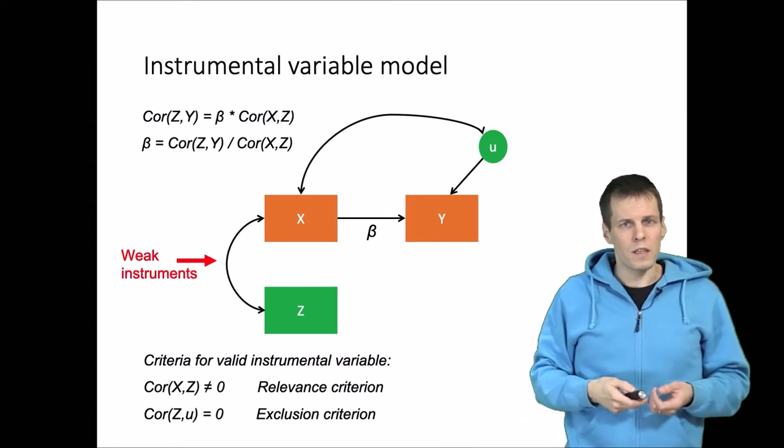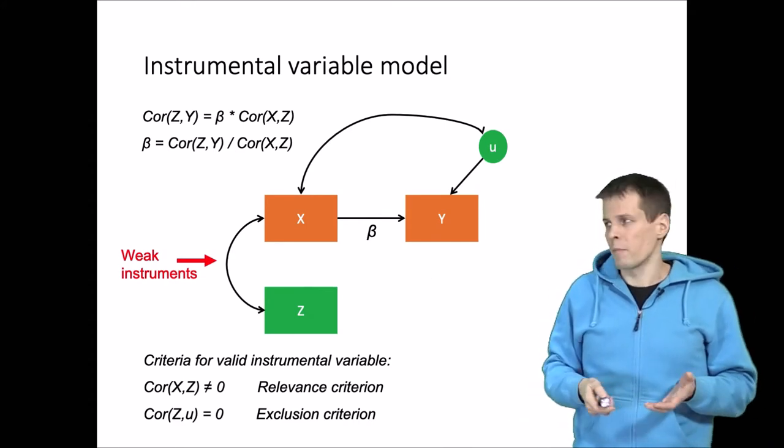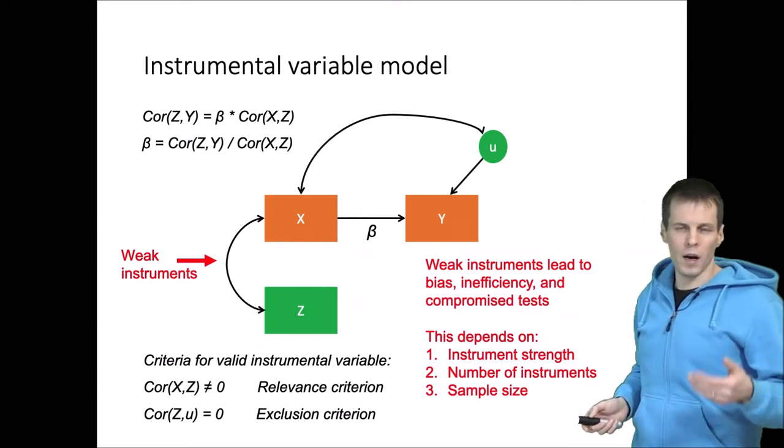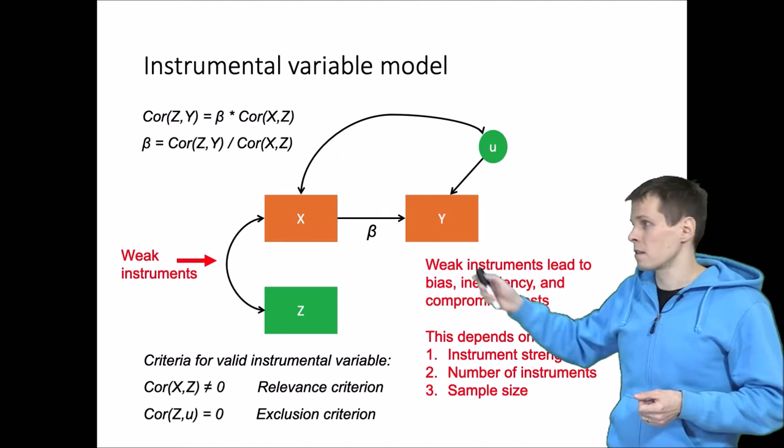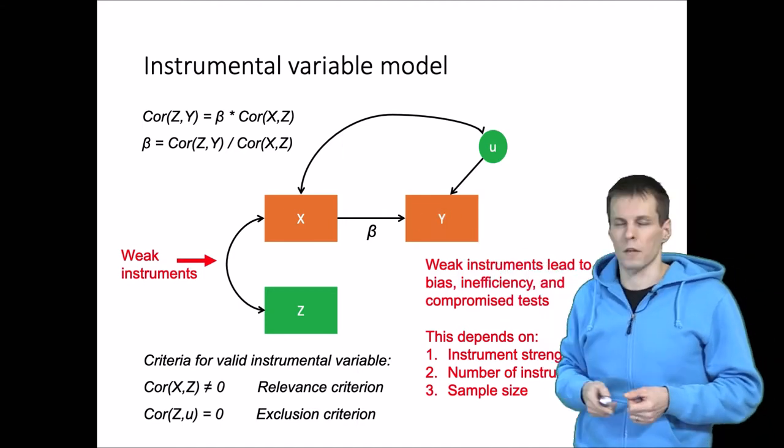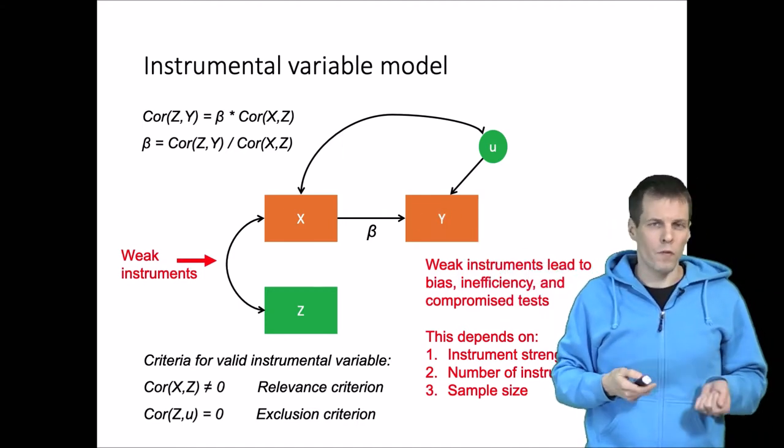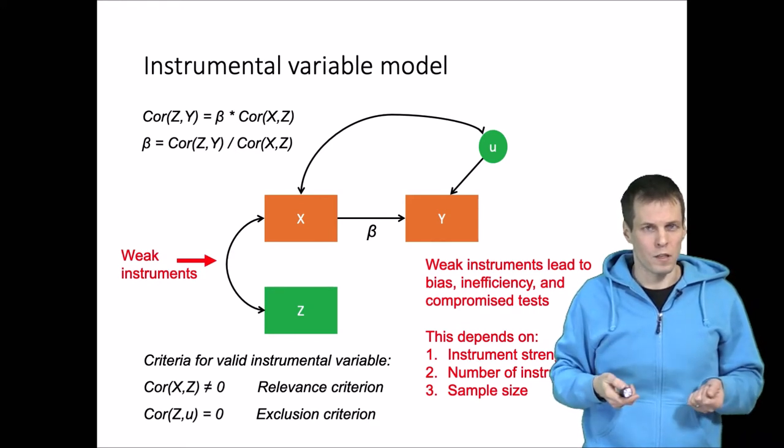If instruments are weak this leads to three different problems: bias, inefficiency, and then also compromised statistical tests for this regression coefficient here. The bias depends on number of instruments, sample size, and the strength of the instruments.